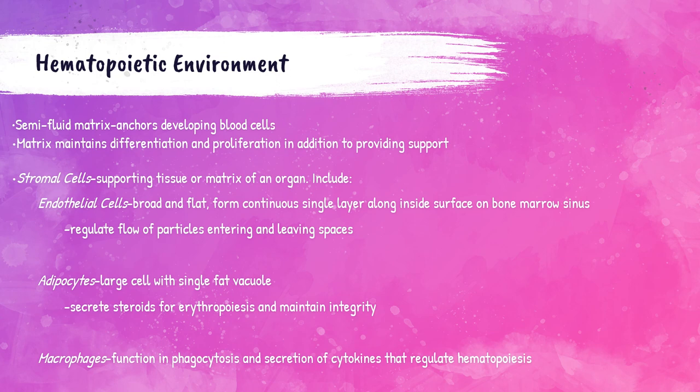Endothelial cells are broad and flat cells that form a continuous layer along the inside surface of the bone marrow sinus. These endothelial cells help to regulate the flow of particles leaving the bone marrow. Adipocytes are fat cells present within the bone marrow that secrete steroids for the production of red blood cells and help to maintain the integrity of the marrow.